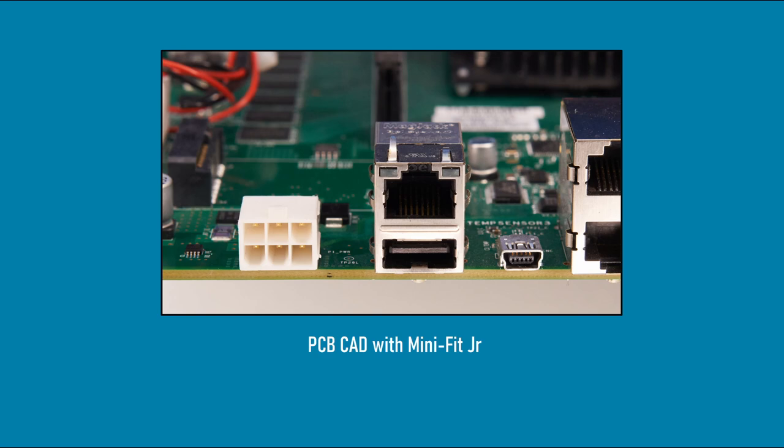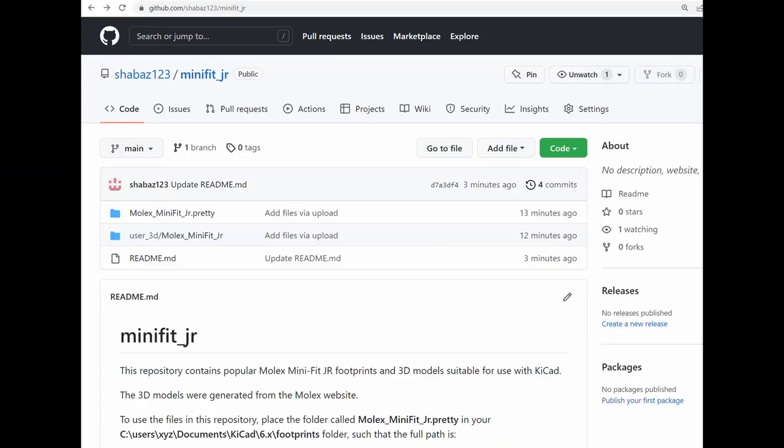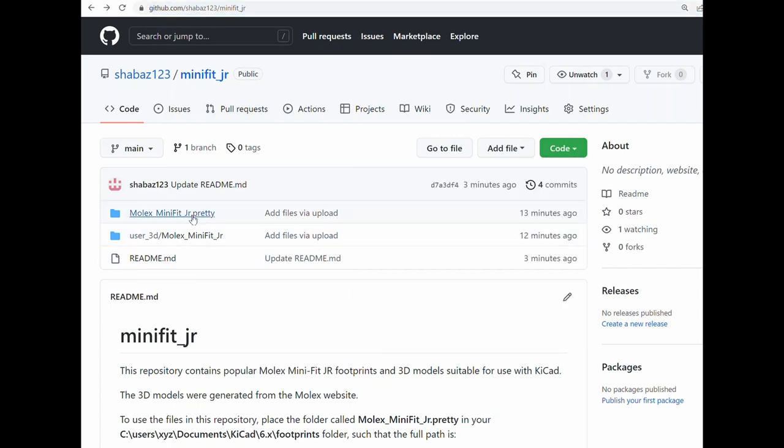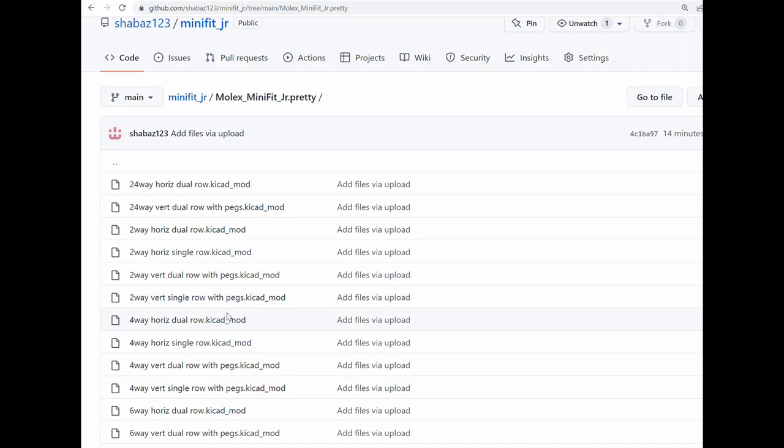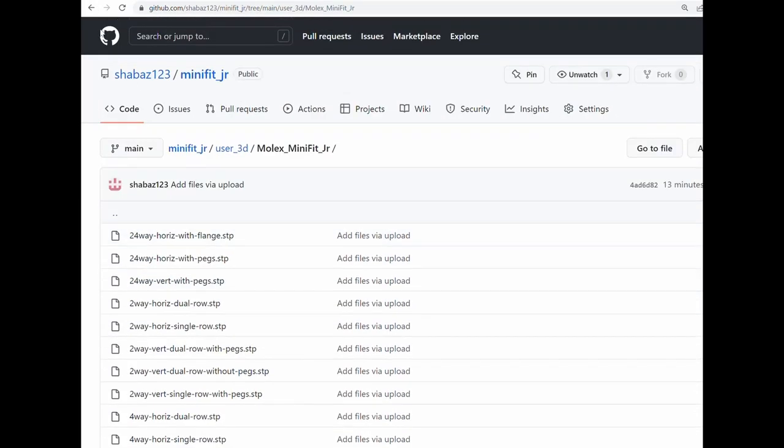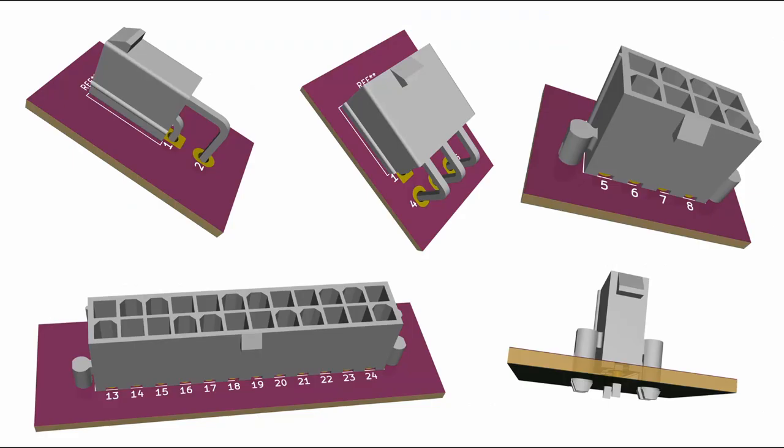KiCad already has Minifit Junior footprints, however, I've made some tweaks and placed 14 of what I think are popular connectors into a separate library that could be used as is or could be modified further. The library's on GitHub, and please share any enhancements you make so that everyone can benefit. I've also taken the CAD models generated by the Molex website and included them so that KiCad can render circuit boards properly with the built-in 3D viewer.